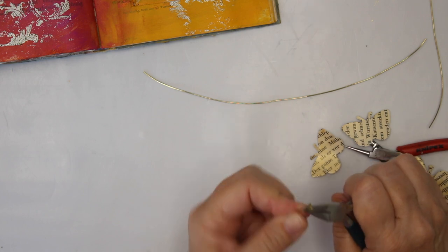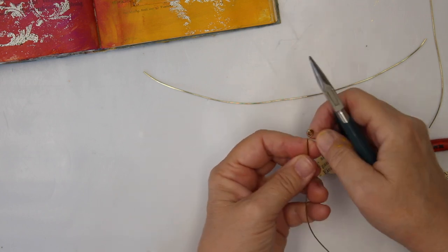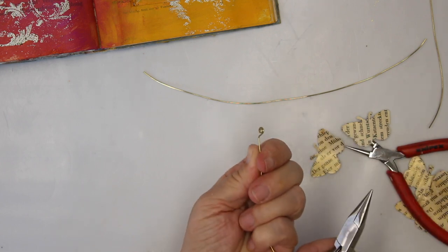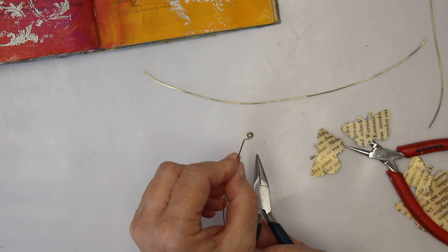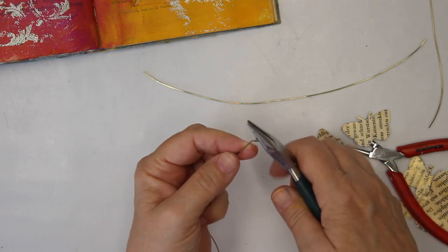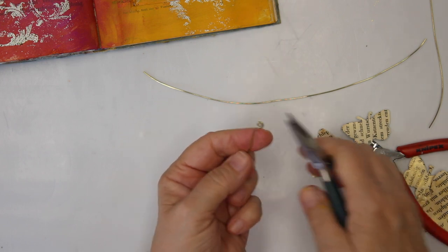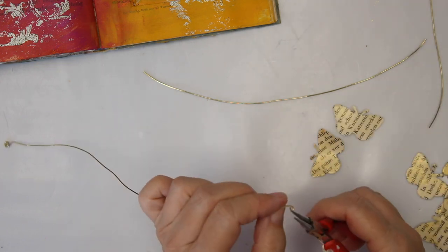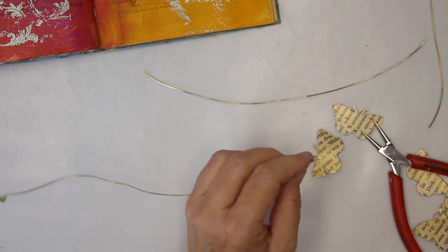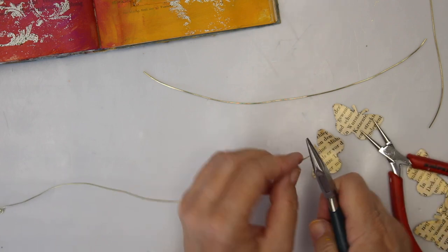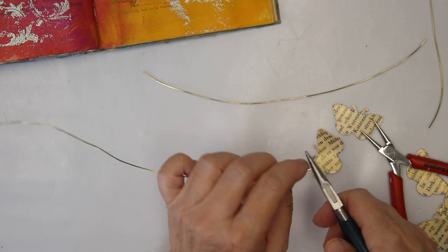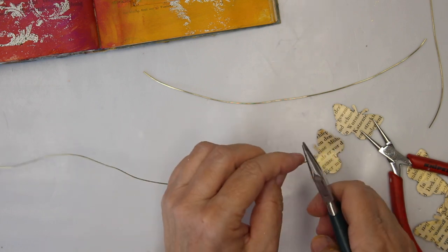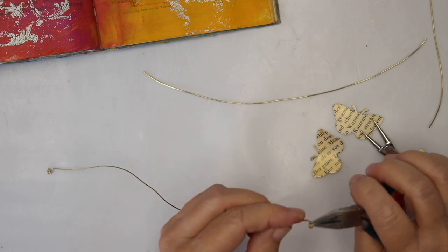Then I make a bend so that I have the spirals somewhat centered. See, I hope you can see it. And I'm gonna do the same thing at the end, the tiniest little loop I can make, start my spiral, and then make a bend.